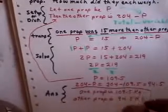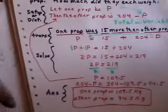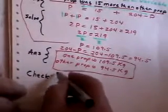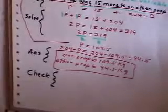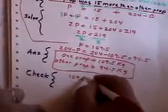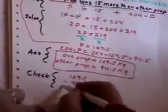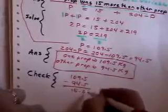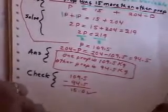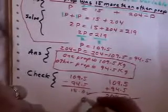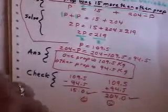Nice box around my answer to make my marker happy. Now I'll go into the checking part. The first check is: are they 15 apart? 109.5 minus 94.5 is 15.0 — so they are 15 apart, one is 15 more than the other. The other check is to see whether they total 204. If I add them up — two happy faces — I have now solved that problem.